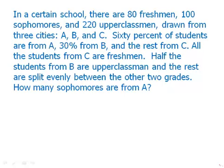That's going to be the other variable. What city is the student from? And we have three categories there. And here we're given percent information. 60% from A, 30% from B, the rest from C. And then we have some other piece of information. All the students from C are freshmen. Half the students from B are upperclassmen, and the rest are split evenly between the other two grades. How many sophomores are from A?